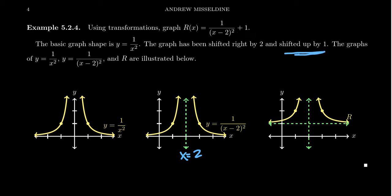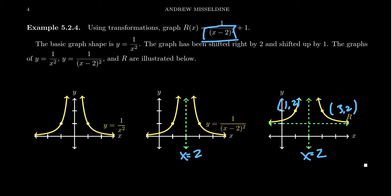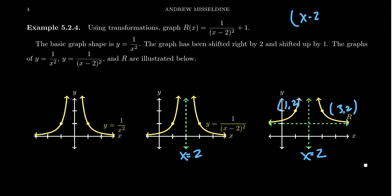The plus 1 outside shifts the graph up by 1. So the point (3, 1) goes up to become (3, 2), and the point (1, 1) becomes (1, 2). The vertical asymptote stays at x equals 2 — a vertical line shifted up is still vertical. The problem with the domain is what makes the denominator equal zero: (x minus 2) squared equals 0 implies x equals 2. So the vertical asymptote coincides with the domain restriction. Shifting everything up by 1 also moves the horizontal asymptote up by 1, giving us a horizontal asymptote at y equals 1.